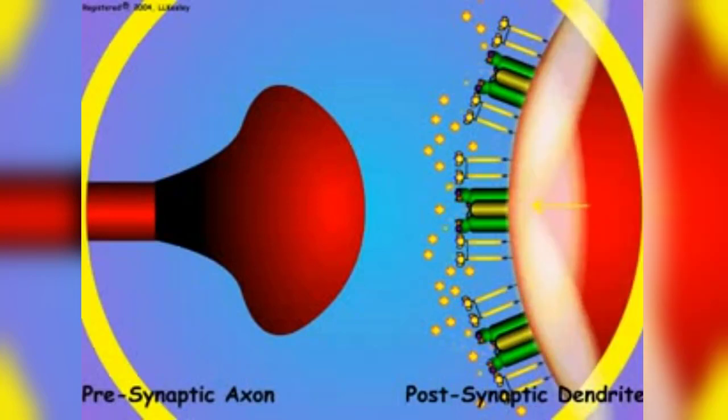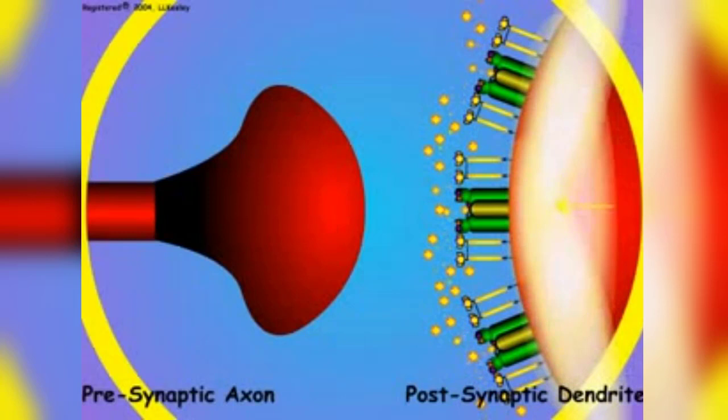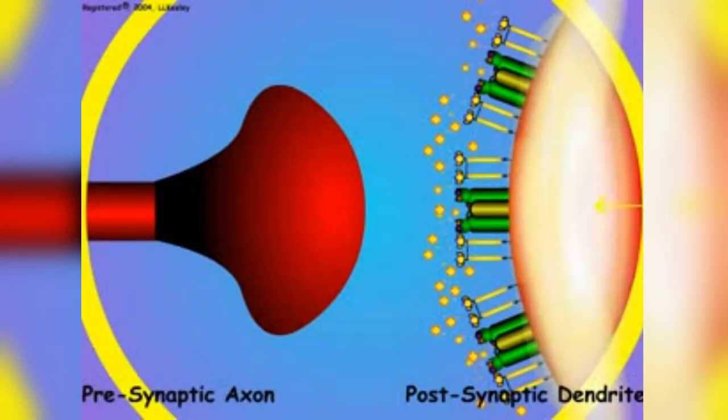The negative depolarization of the postsynaptic area spreads over the sensitive postsynaptic region and generates new action potentials that are carried away by the postsynaptic axon.